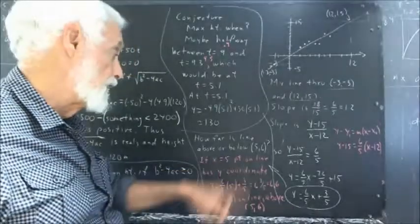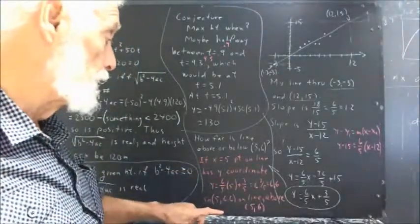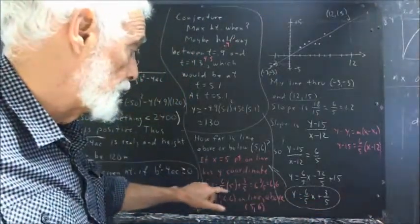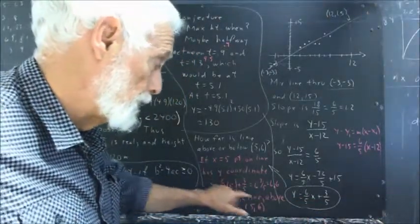How do we find the x equals 5 point on the line? Well, its y coordinate we get by just plugging in 5 for x. We get y equals 6 fifths times 5 plus 3 fifths.